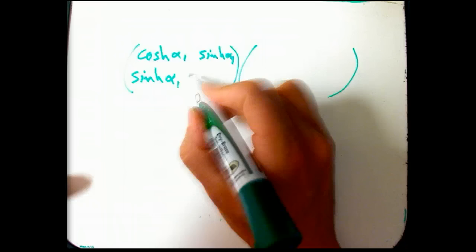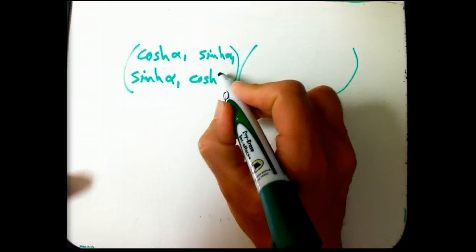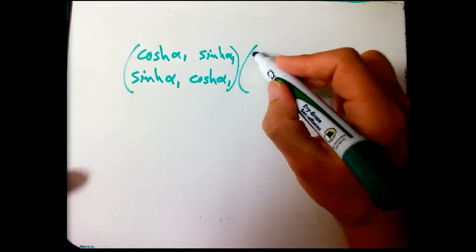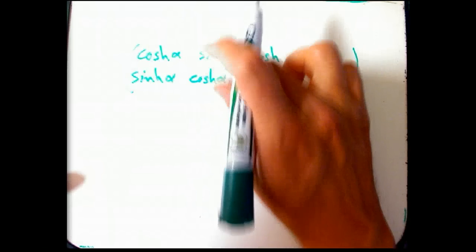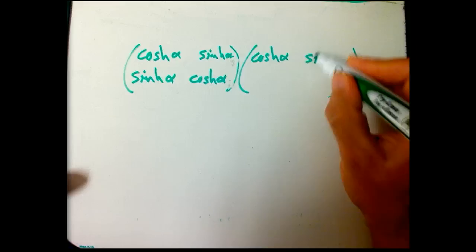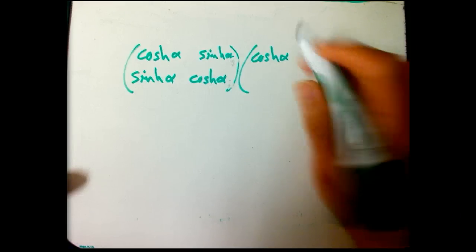One with velocity parameter or rapidity, whatever you want to call it, alpha 1. And the other one, actually, let's just call them alpha and beta. It's going to be easier. So one with alpha, one with beta. And that should be a beta now.